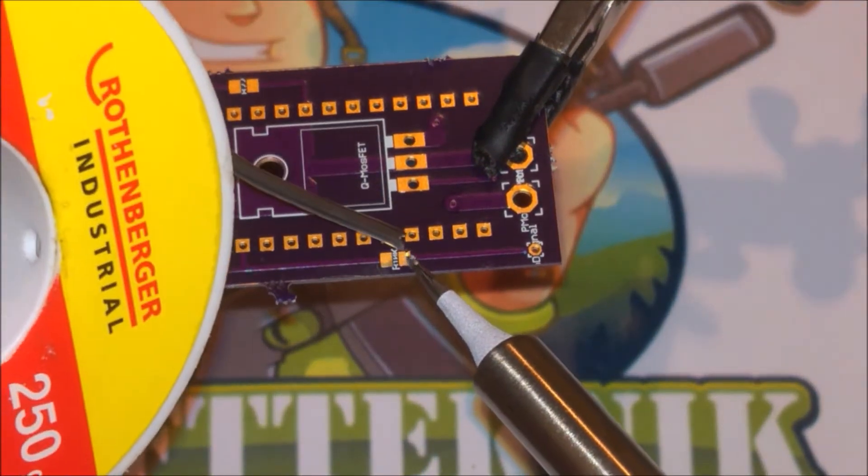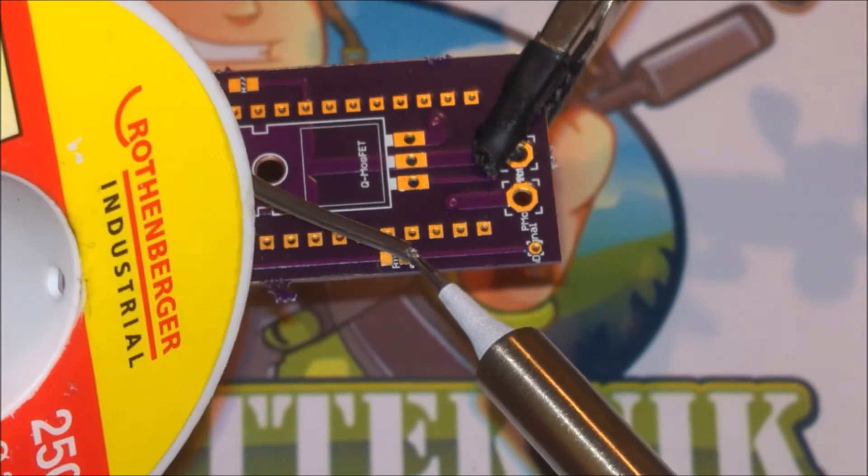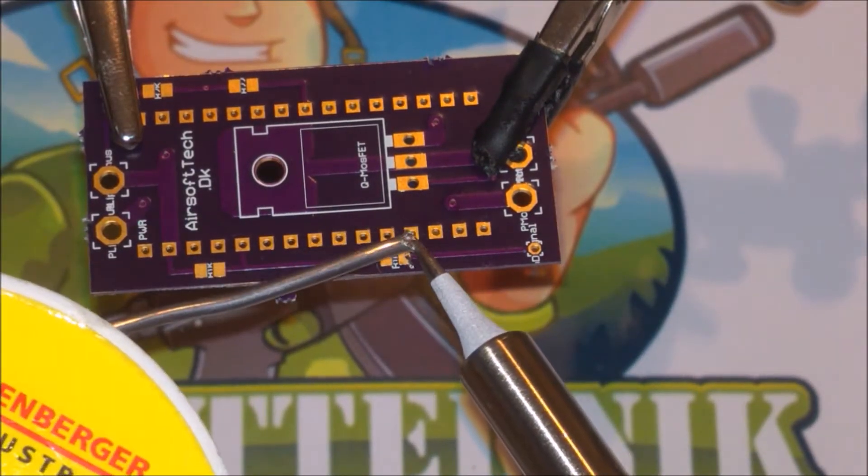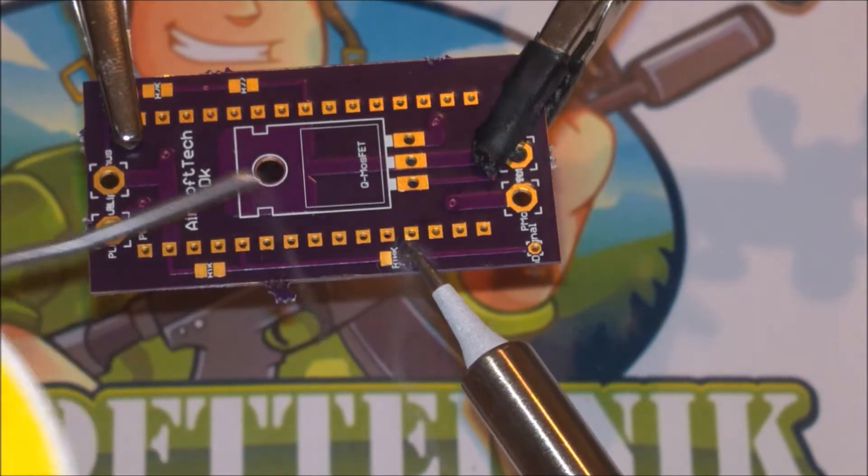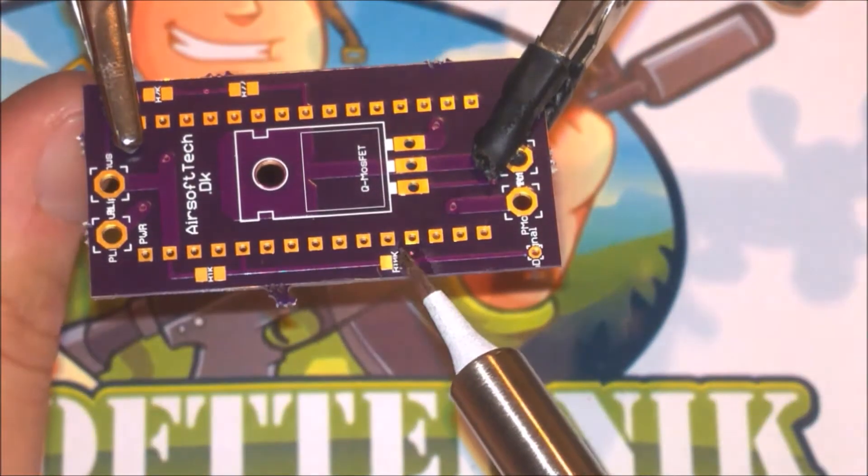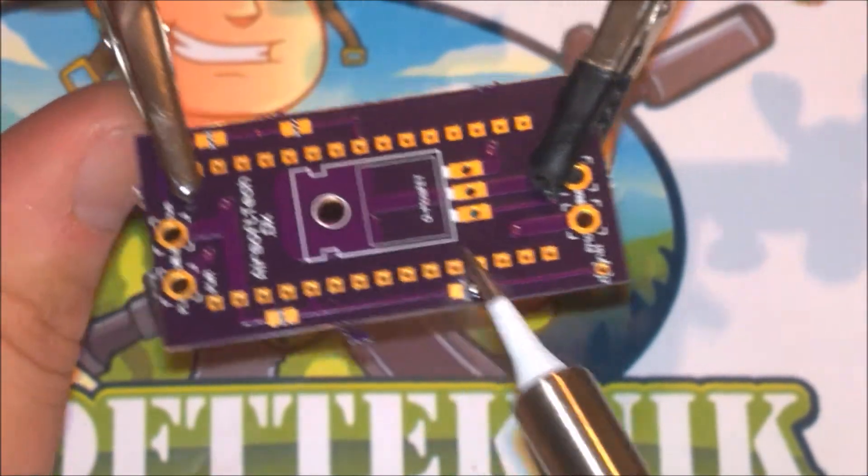First I pre-tin the solder pads and that is just adding some solder to the pads. Pre-tinning the pads is a bit easier because then I can just add the resistor on top and reflow the solder.